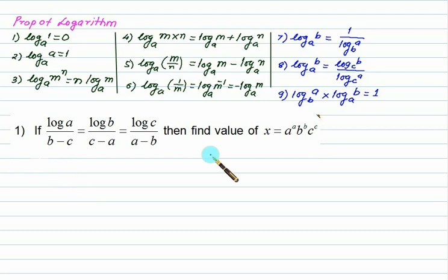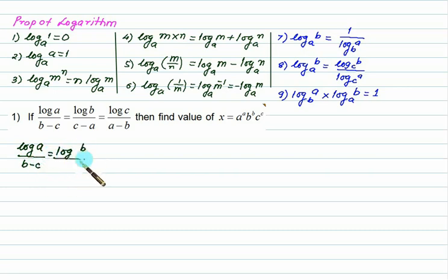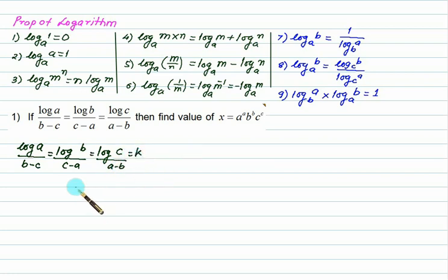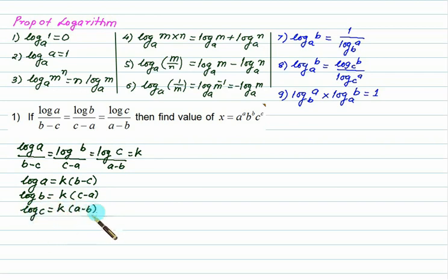Based on these properties, we are given an equation and need to find the value of x. Since all terms are constant, we write: log(a)/(b−c) = log(b)/(c−a) = log(c)/(a−b) = constant k. Therefore, log of a = k(b−c), log of b = k(c−a), and log of c = k(a−b).